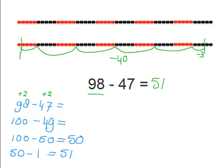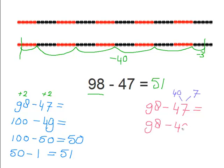So let's solve this problem in yet another way. Again, we will write out ninety-eight minus forty-seven. Now let's round ninety-eight to the nearest ten again, like we did on the other problem, so we must plus two. And now we're going to break up the forty-seven into forty and seven. So let's keep the ninety-eight and then minus the forty first, which is fifty-eight. And then fifty-eight minus the seven — from the forty-seven — so that still leaves us with fifty-one.